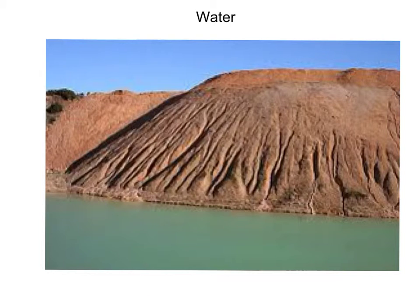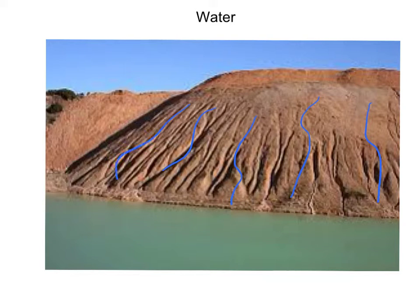Water takes time to erode. In this picture, rain fell onto the Earth's surface and carried sediment along with it down the hill. These channels are called gullies. A gully is a water-borne ravine.